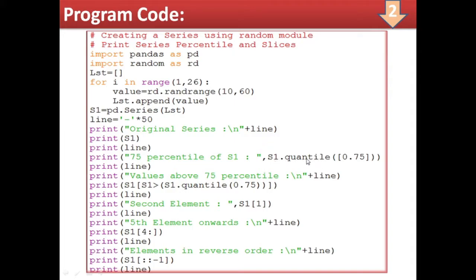Using s1.quantile(0.75) gives the 75th percentile. Using 0.50 gives the 50th percentile, and 0.25 gives the first quartile. If you pass a list like [0.25, 0.50, 0.75], you get all three quartiles. Here I have calculated the 75th percentile. After printing a line, the next query — values above 75th percentile — is handled by writing s1[s1 > s1.quantile(0.75)], which uses boolean indexing to display all values above the 75th percentile.